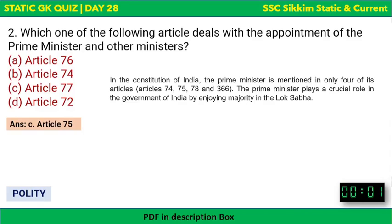In the Constitution of India, the Prime Minister is mentioned in only four articles: Article 74, 75, 78, and 366. Article 75 talks about the appointment of the Prime Minister and also the other ministers.